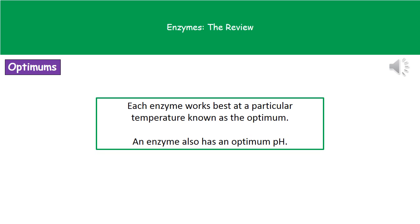Enzymes have what's called an optimum. When looking at temperature and pH, each enzyme has a particular temperature and a particular pH that suits it perfectly. At that point the enzyme works at its fastest rate, and that's called its optimum.